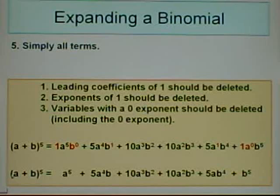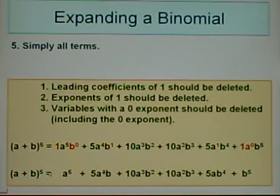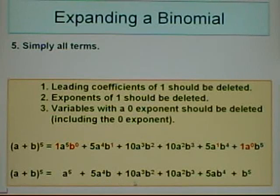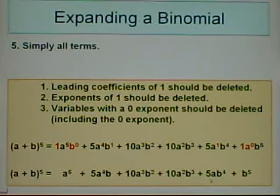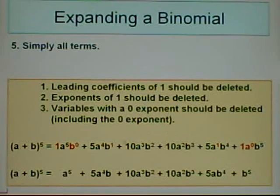So our final expanded binomial is: A plus B to the fifth equals A to the 5th plus 5A to the 4th B plus 10A to the 3rd B squared plus 10A squared B cubed plus 5AB to the 4th plus B to the 5th. And that same process will work for any whole number exponent on a binomial.